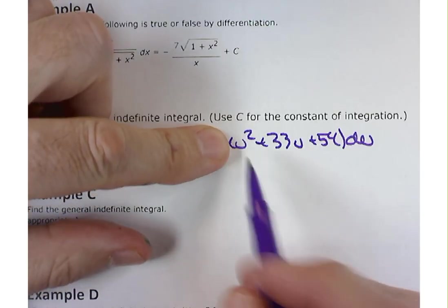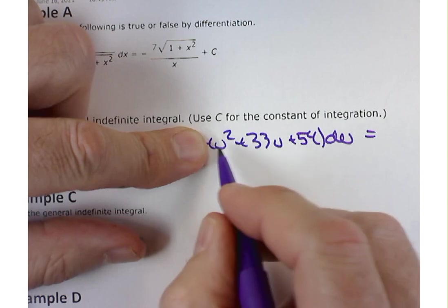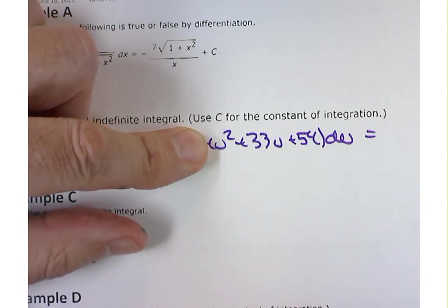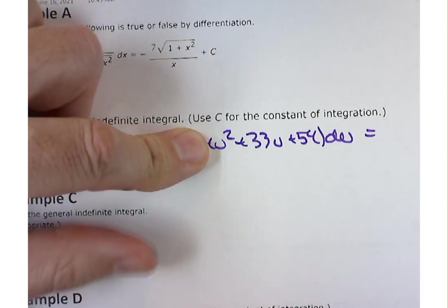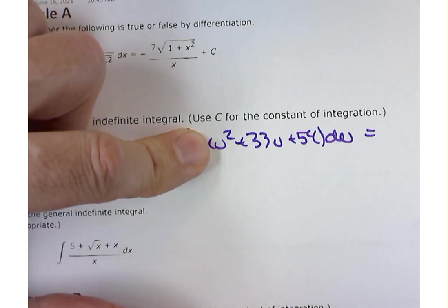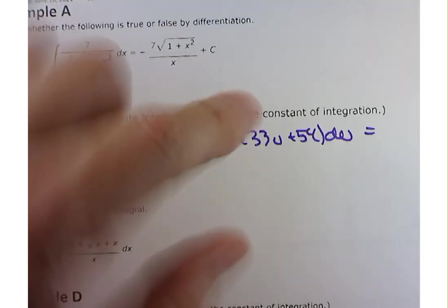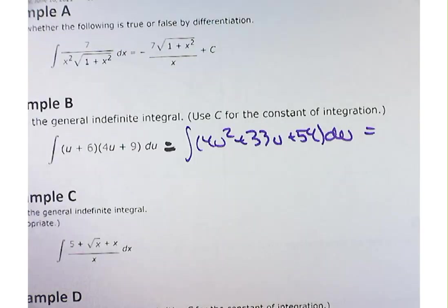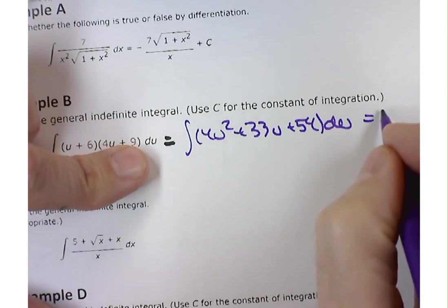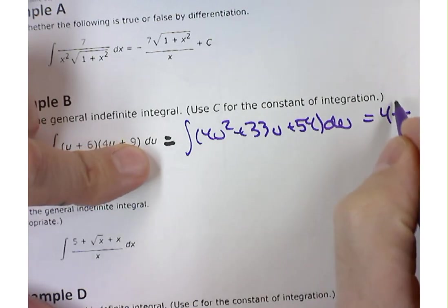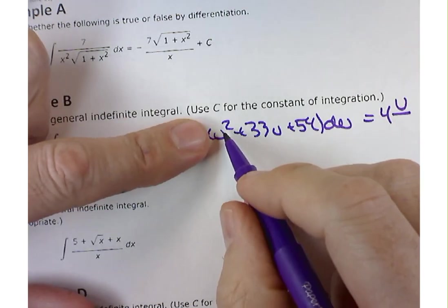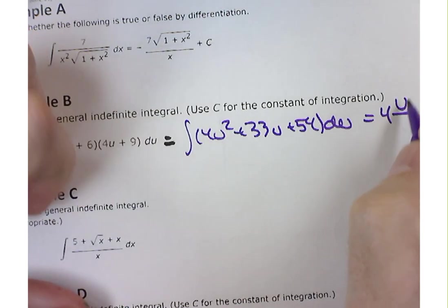Let's ignore the 4 here and work on the antiderivative of u squared. So Matt, I always kind of miss you because you're behind my screen. So Matt, what's the antiderivative of u squared? It's u cubed over 3. Good.